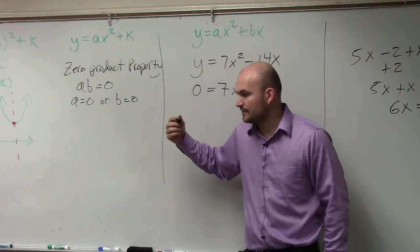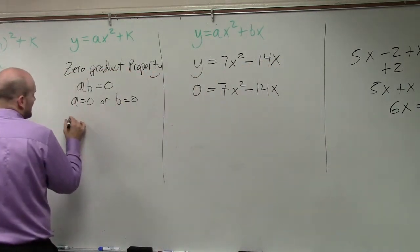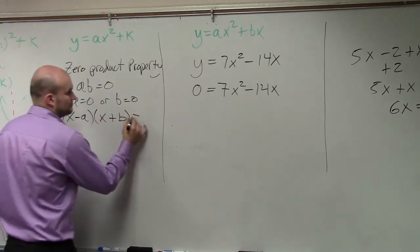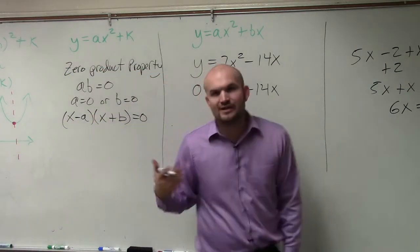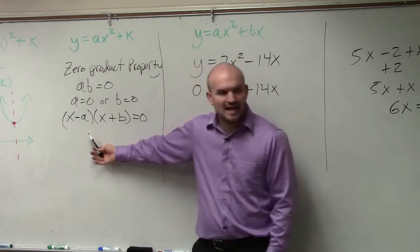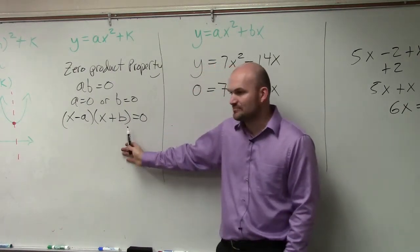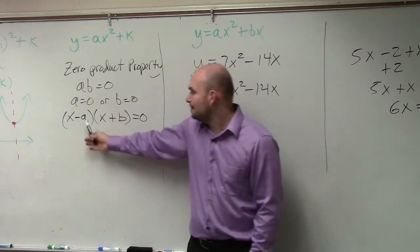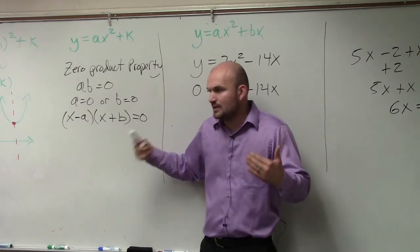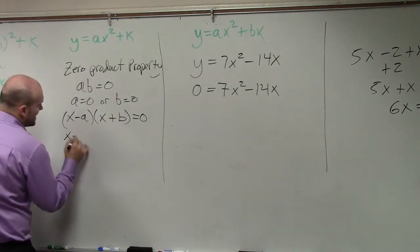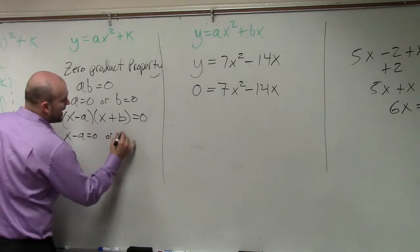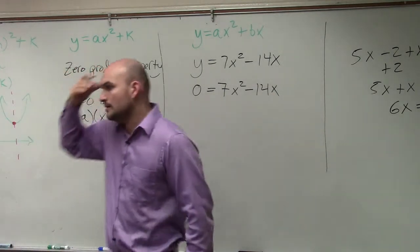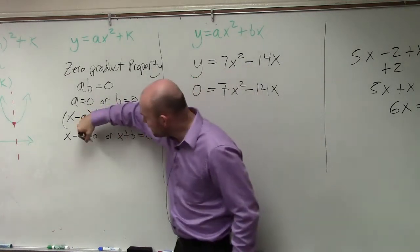That doesn't just work for numbers — it also works for expressions. If I have the expression x minus a times the expression x plus b equals zero, and you could replace these with numbers if you wanted to — just think of a and b as real numbers — if you have this times this equals zero, then you can say x minus a equals zero, or x plus b equals zero. So now you have an equation.